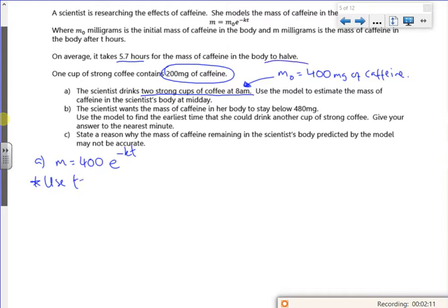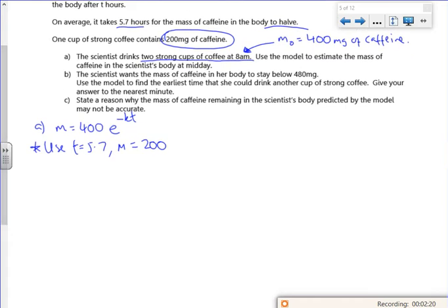So I'm going to use T equals 5.7 and M is half of the initial 400 to give me 200, and that will find k for me. So 200 equals 400 E to the minus k times 5.7.